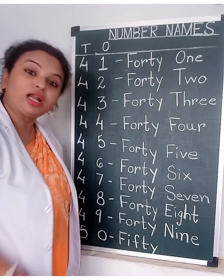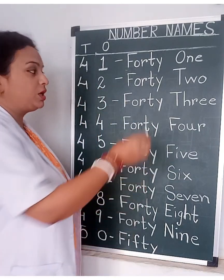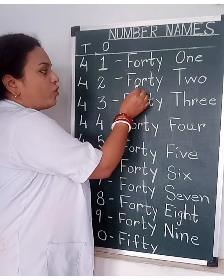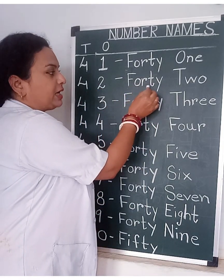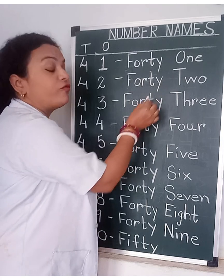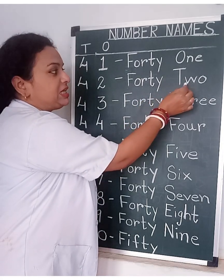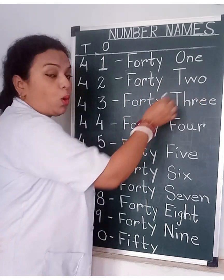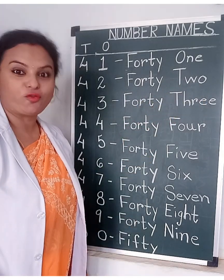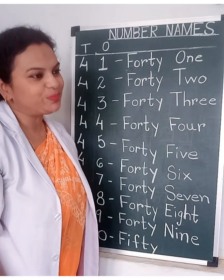4, 2 — 42. F, O, R, T, Y — FORTY. T, W, O — TWO. 42.